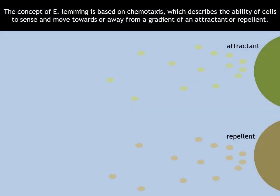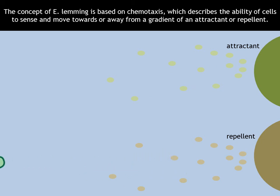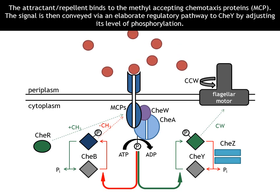The concept of e-lemming is based on chemotaxis, which describes the ability of cells to sense and move towards or away from a gradient of an attractant or repellent. The attractant or repellent binds to the methyl-accepting chemotaxis proteins, MCP.